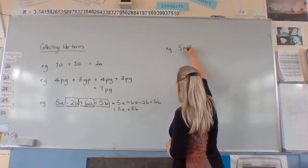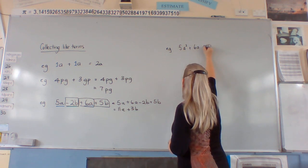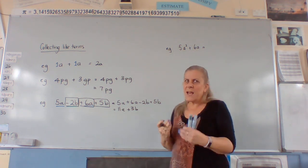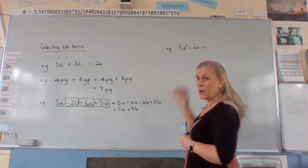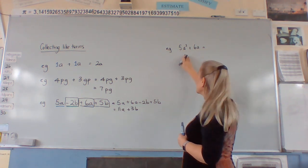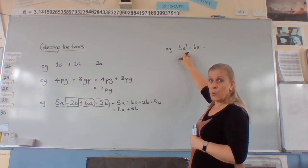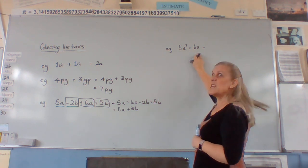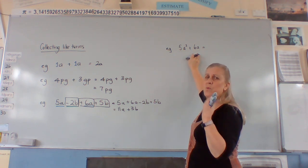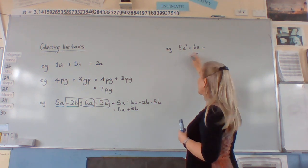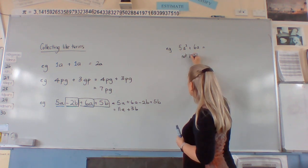And they say 5A squared plus 6A equals what? And you want to say there's lots of apples here going on, but it's not. This one here is square apples and this one here is round apples. So we can't add these together.